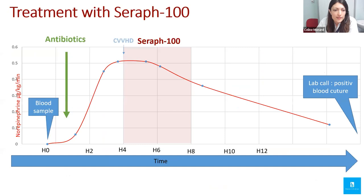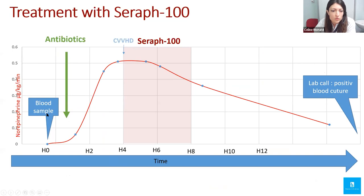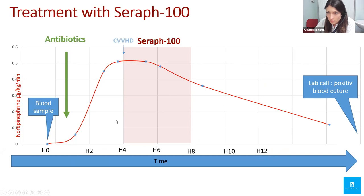Here you can see the vasopressor requirements: antibiotics started straight after blood cultures, CVVHD and Seraph 100 started two hours later. When we started the Seraph, the patient stabilized and norepinephrine decreased. Over 12 hours later, the lab called to say blood cultures were positive — so when we started Seraph, we did not yet know the blood culture would be positive. This patient actually had endocarditis, which we suspected quickly via transthoracic echocardiography.